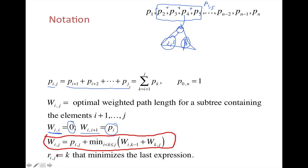As another side important information, we have rij, which is the root element we choose to put for ij—the best element to choose as a root for this subsequence.